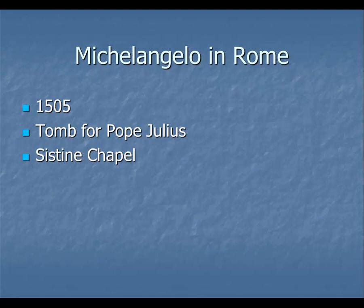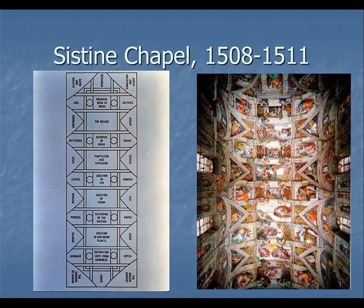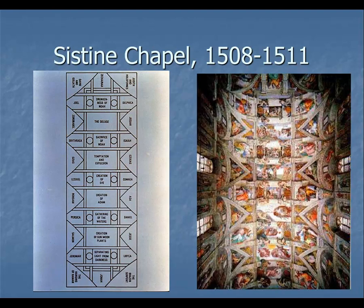Michelangelo was commanded by Julius to fresco the ceiling of the Sistine Chapel. He did not want to do this — he actually left Rome saying he wouldn't do it. But you didn't tell the pope no, and so the pope, through his ways of persuasion, brought Michelangelo back to Rome, and he commenced this project.